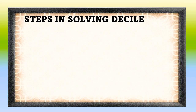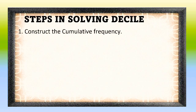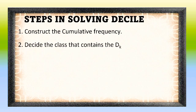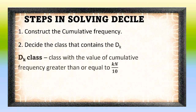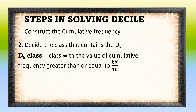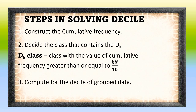Here are the steps that we need to follow in solving for deciles for group data. First, construct the cumulative frequency. Second, decide the class that contains D sub K. The D sub K class is a class with a value of cumulative frequency greater than or equal to K times N all over 10. And finally, compute for the deciles of group data.